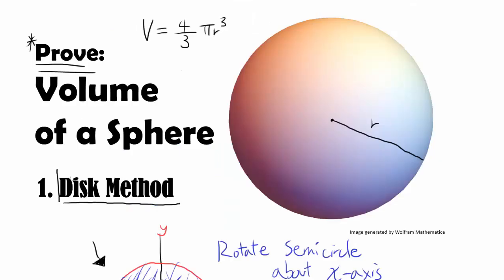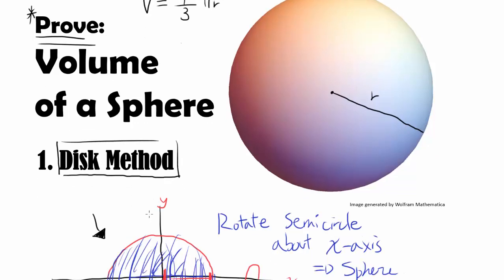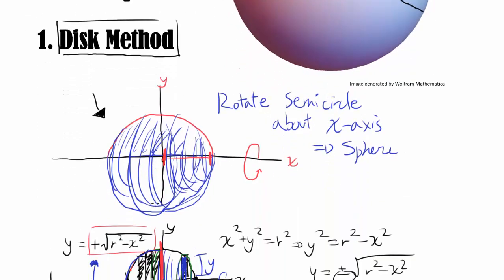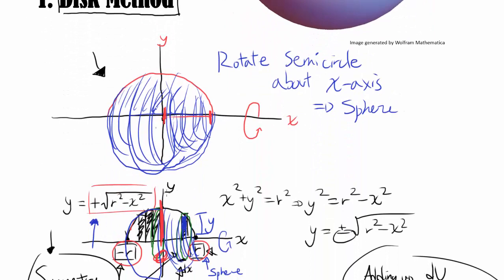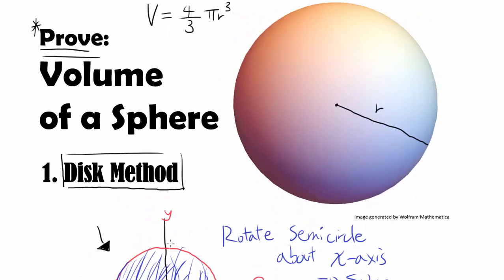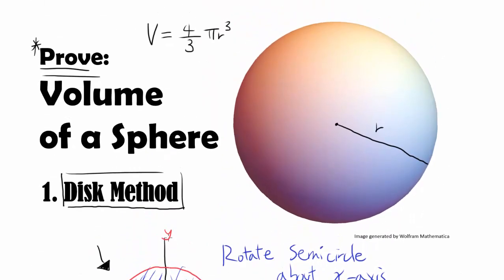That's why this method is called the disk method — because you're adding up the volumes of many disks to find the volume of the entire solid. And we have our answer: the volume of a sphere is 4/3 π r³.